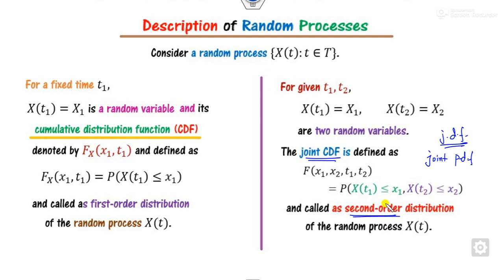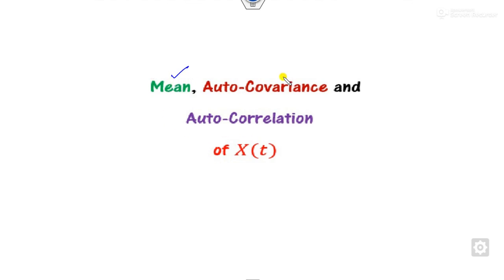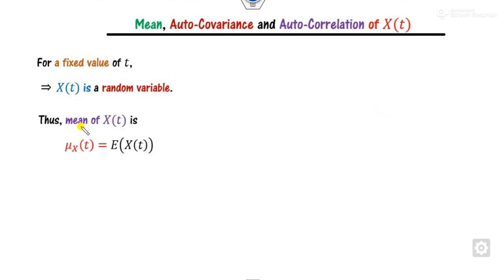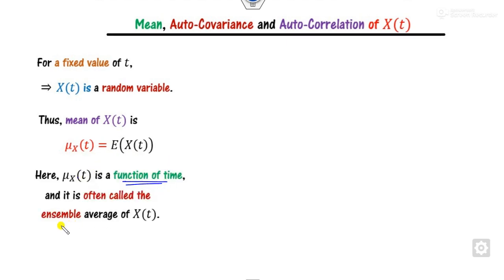Once you define the random variable, you can define the mean, variance, covariance, and so on. The mean: for any fixed value of t, this is a random variable, and the mean is E[X] = ∫x·f(x)dx, where f is the PDF. So the mean μ_X(t) is a function of time — also called the ensemble average.